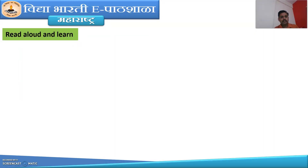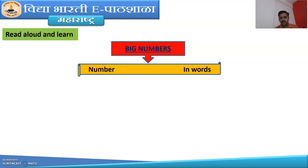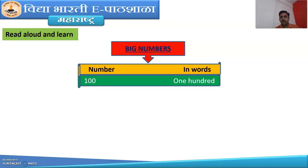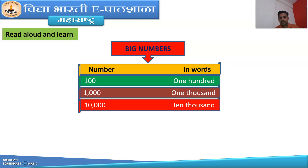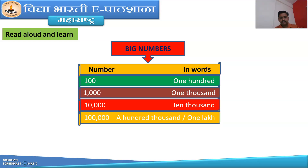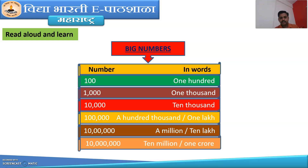Now read aloud and learn. Here are some big numbers. We have already learnt about small numbers from 1 to 100. Now here are some big numbers — you have to read and learn them. First number is 100, next is 1,000, next is 10,000, then 1,00,000 or 1 lakh, next is a million or 10 lakh, and then 1,00,00,000 or 1 crore.